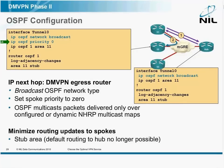Remember that OSPF hellos and routing updates are only delivered over the configured or dynamic multicast maps. So if you don't configure a multicast map for the hub router on the spoke, the hub router will not receive the hello packets from the spoke, and OSPF will not run.